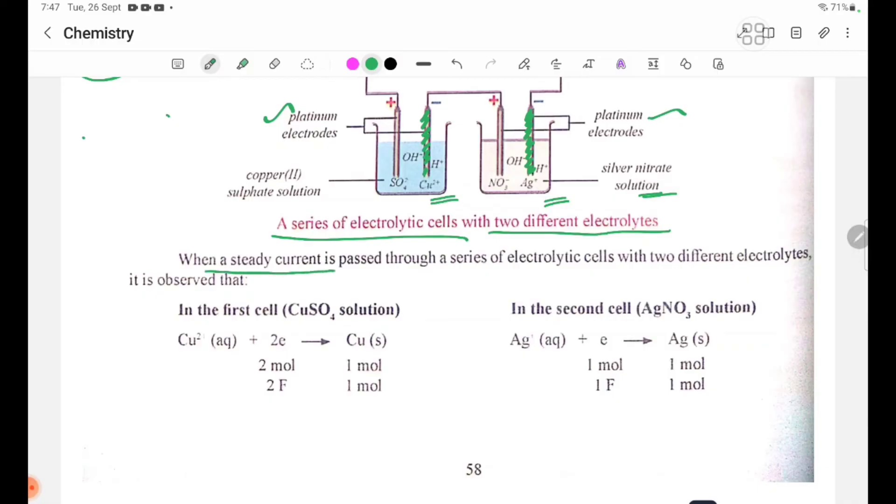When a steady current is passed through a series of electrolytic cells with two different electrolytes, it is observed that in the first cell with CuSO4 solution, Cu2+ (aqueous) plus 2 electrons forms Cu solid. Two moles of electrons are required for one mole of Cu.